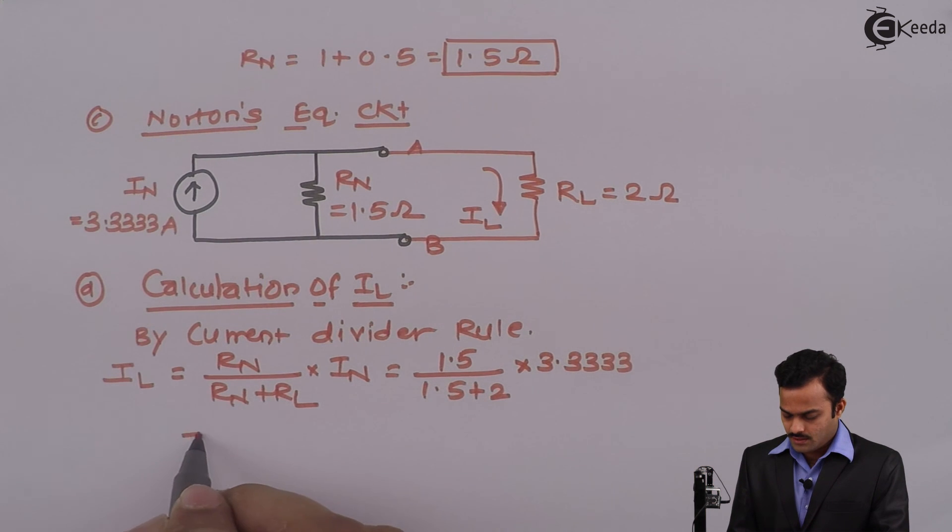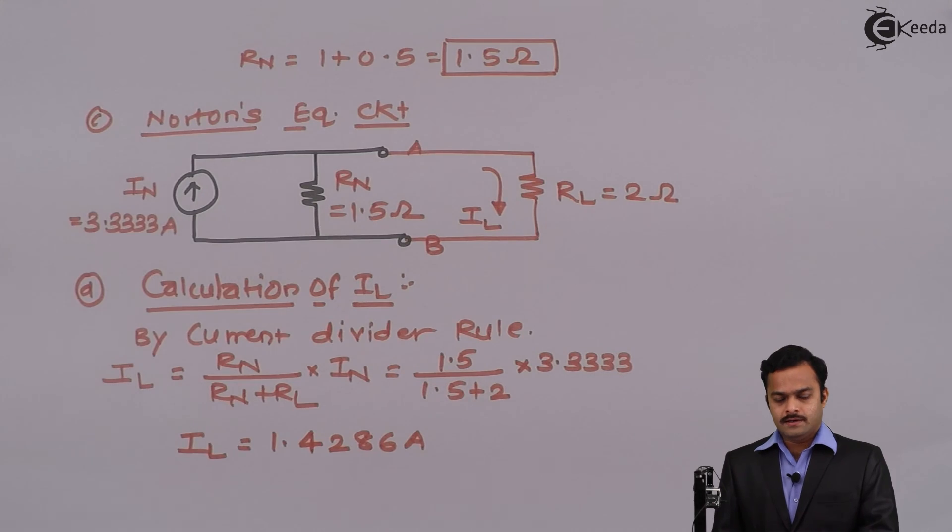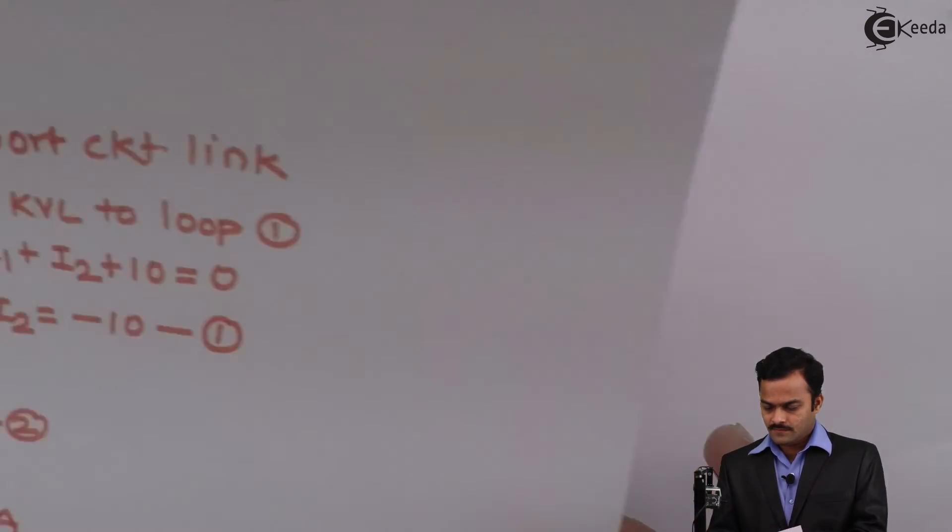So if I solve I will get load current as 1.4286 ampere.